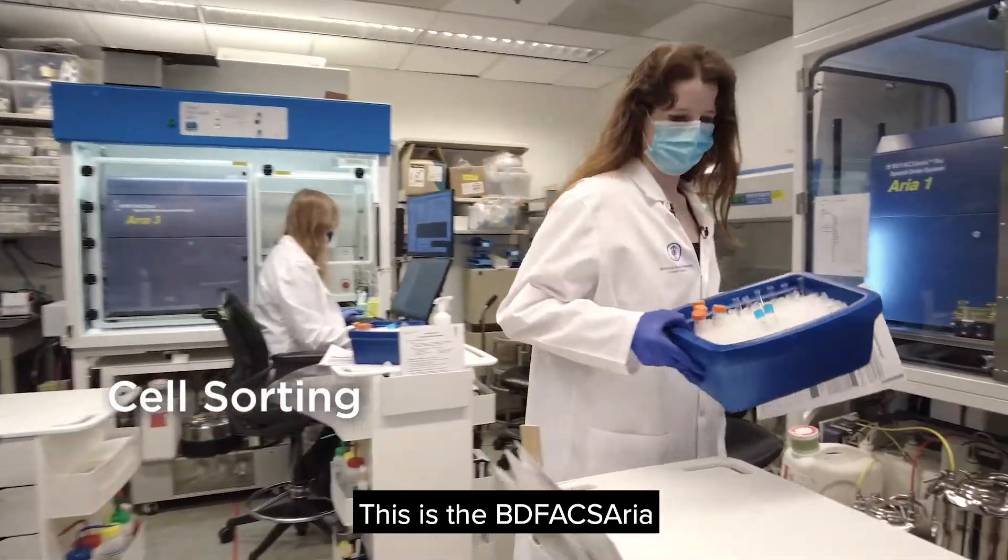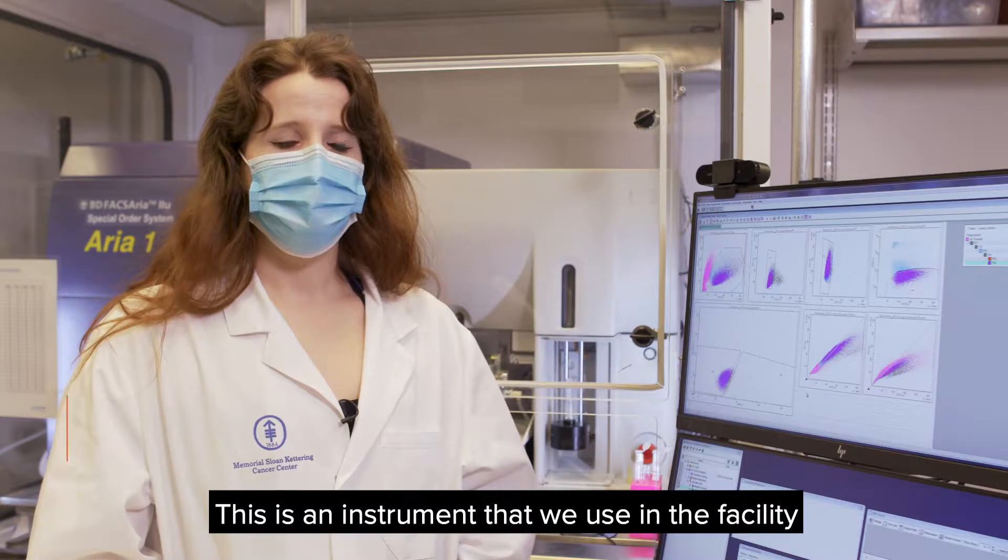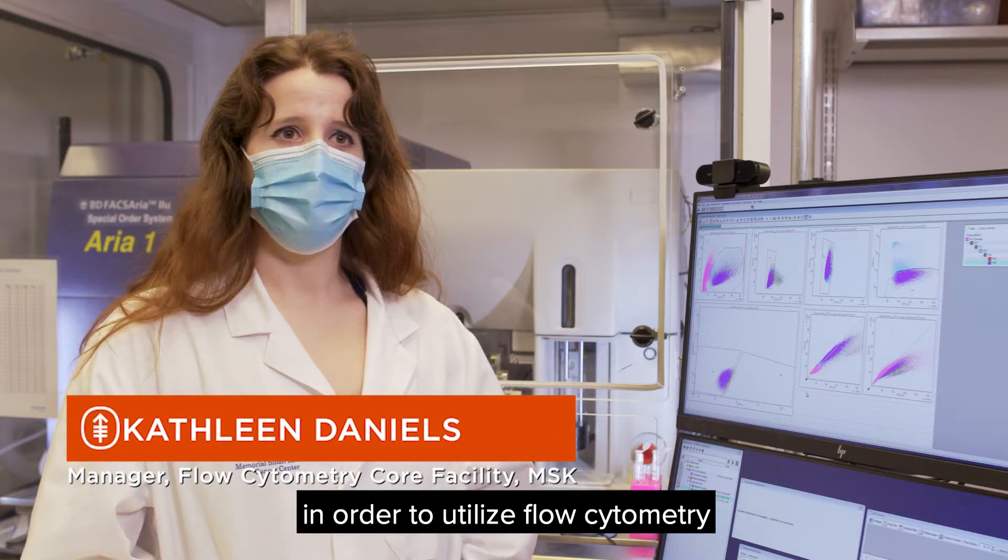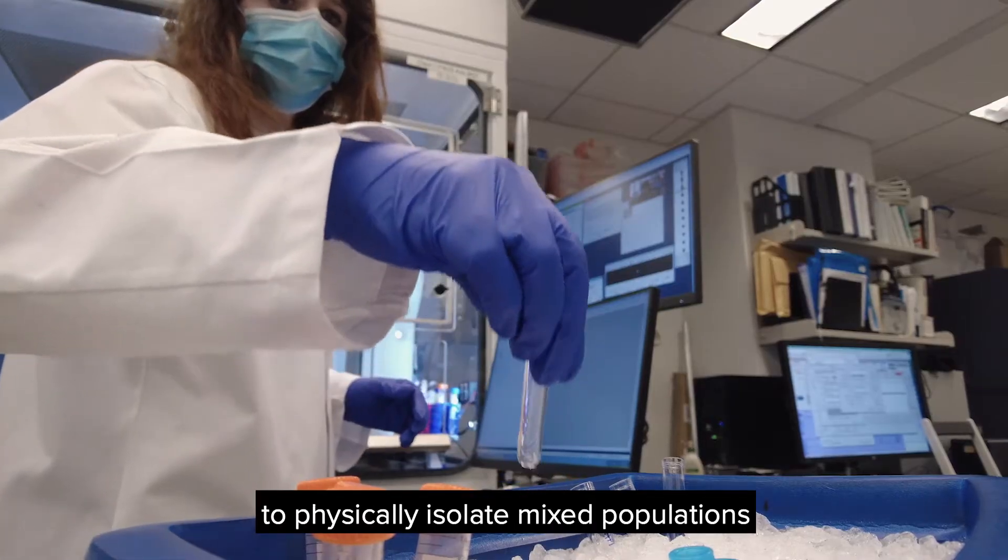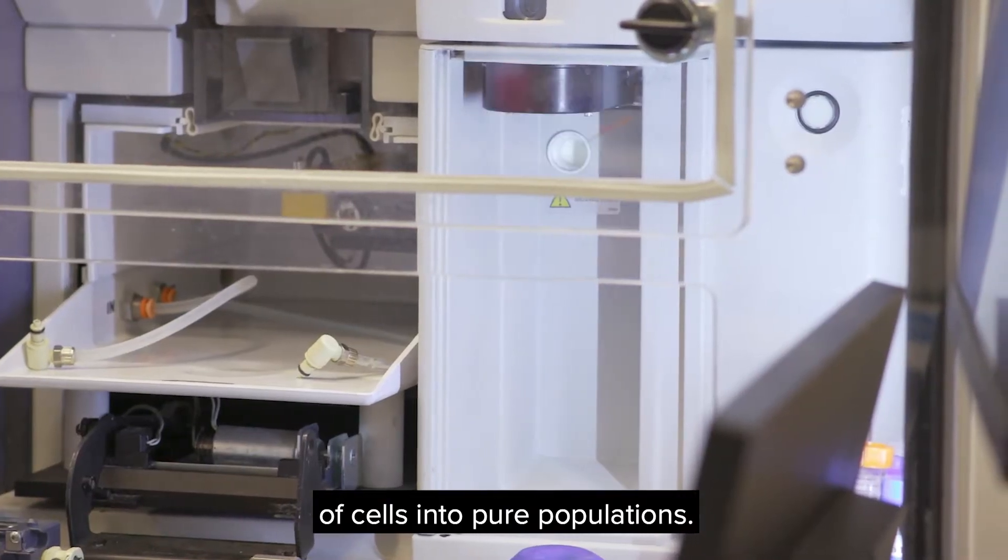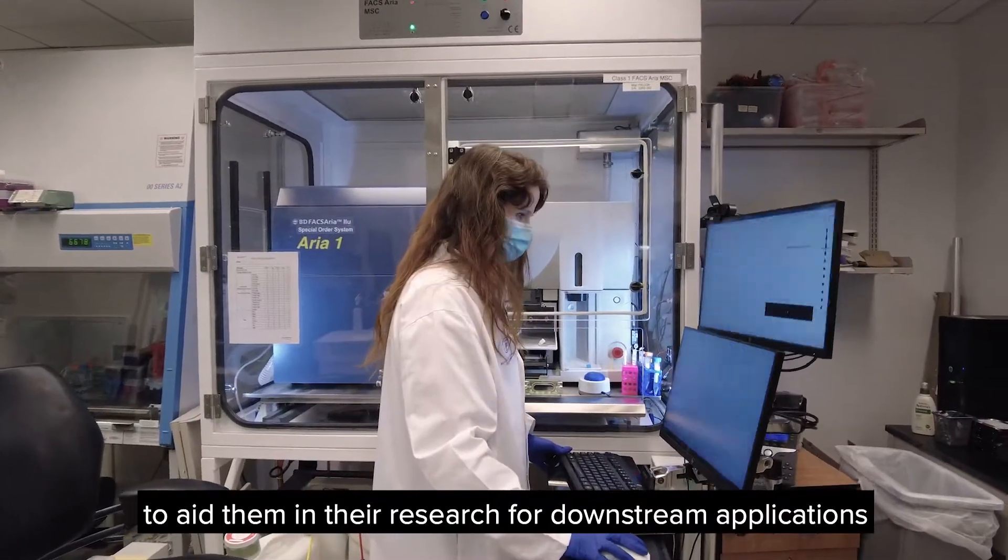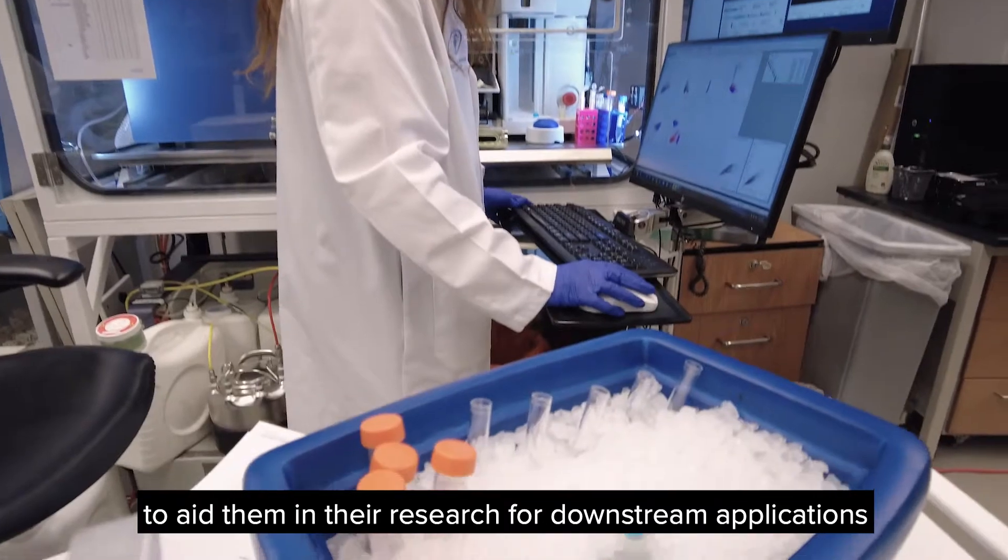This is the BD FAX ARIA here at the flow cytometry core facility at SKI. This is an instrument that we use in the facility in order to utilize flow cytometry to physically isolate mixed populations of cells into pure populations. This technology can be used by researchers throughout SKI to aid them in their research for downstream applications such as cell culture or sequencing applications.